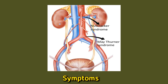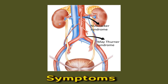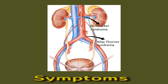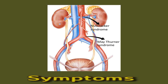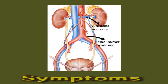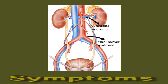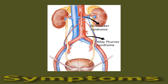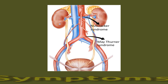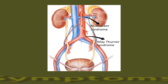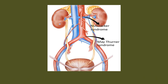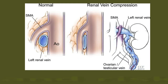When symptoms occur, they may include pain in the left flank, abdomen, or groin; blood in the urine; protein in the urine; urinary tract infections; kidney damage; high blood pressure; varicose veins; and enlarged veins in the testicles in males.